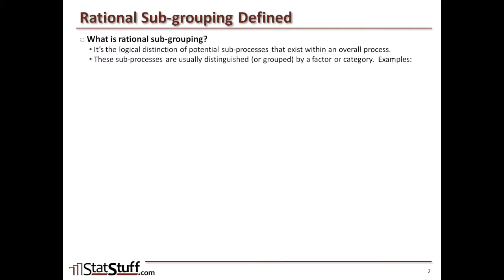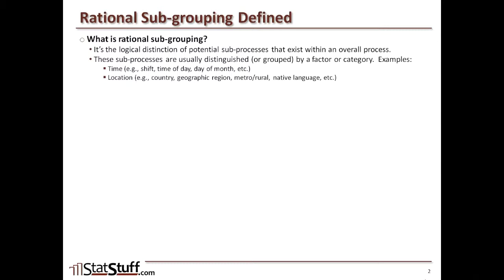Let's go over a few examples. Within your data set, if you have logical breaks between issues like time — such as a shift, or time of day, or day of month — those could represent the different subgroups you might want to use to identify the different subprocesses within your overall process. Or maybe by location, where you've got things broken out between country, geographical regions, metro areas, or wherever the native languages are. Those kinds of things could help distinguish natural subgrouping that you want to use.